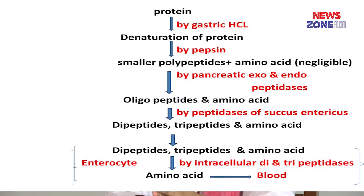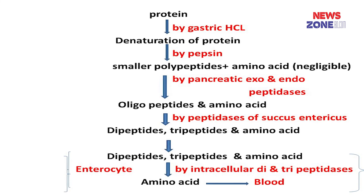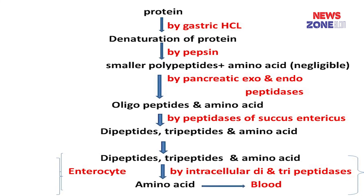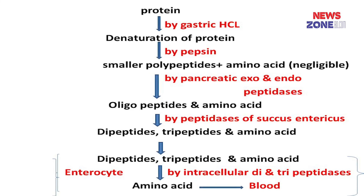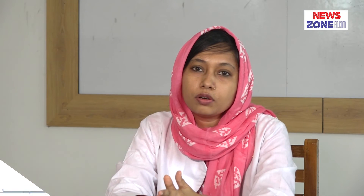So finally, we get the end product of protein digestion, which is amino acid — the simple absorbable unit of protein. This is all about today's class on protein digestion. Next class, I will discuss how protein is absorbed. For any inquiry about this lecture, please ask questions in the comment section.